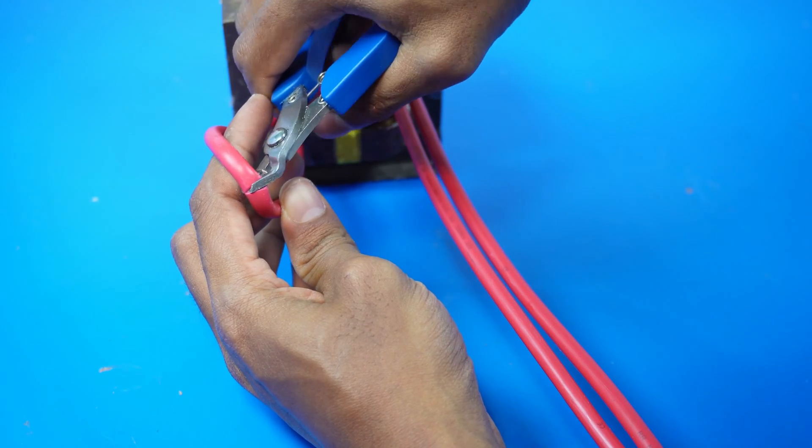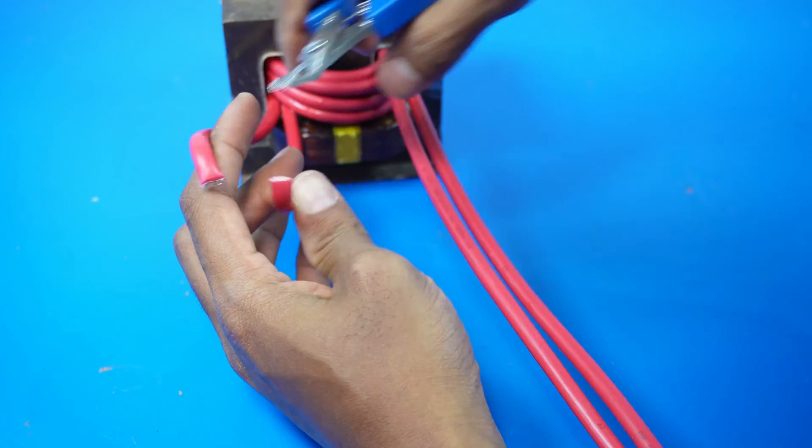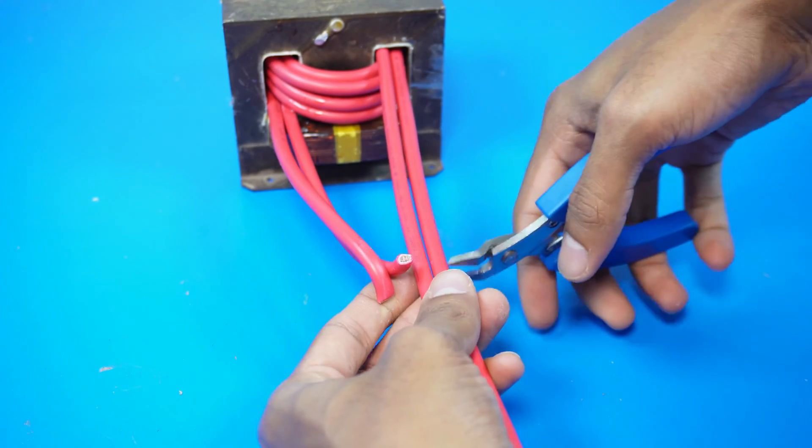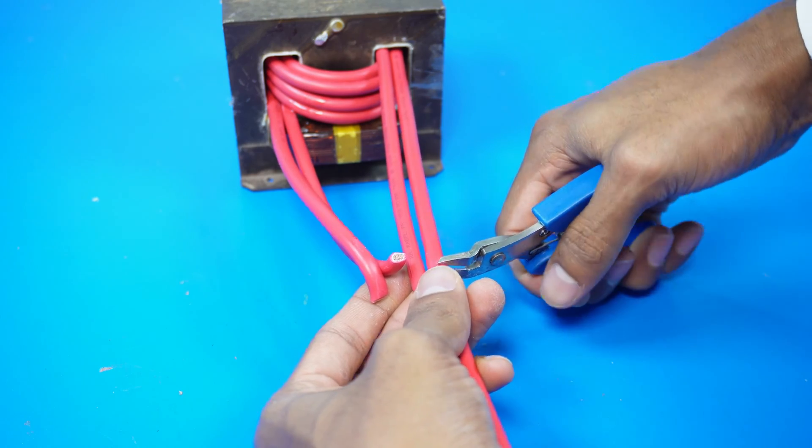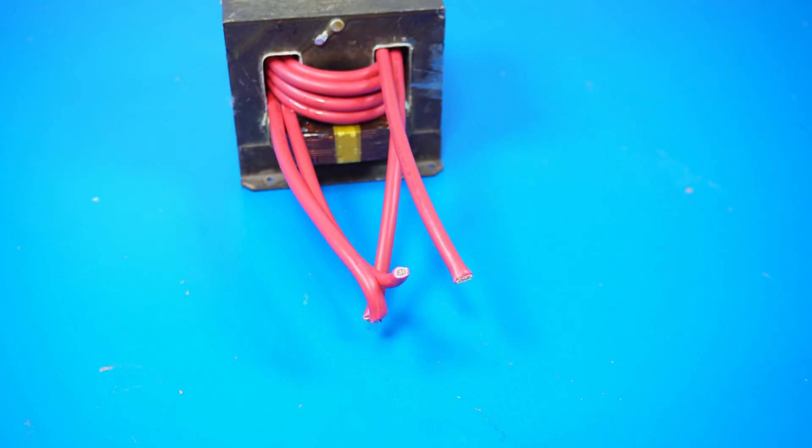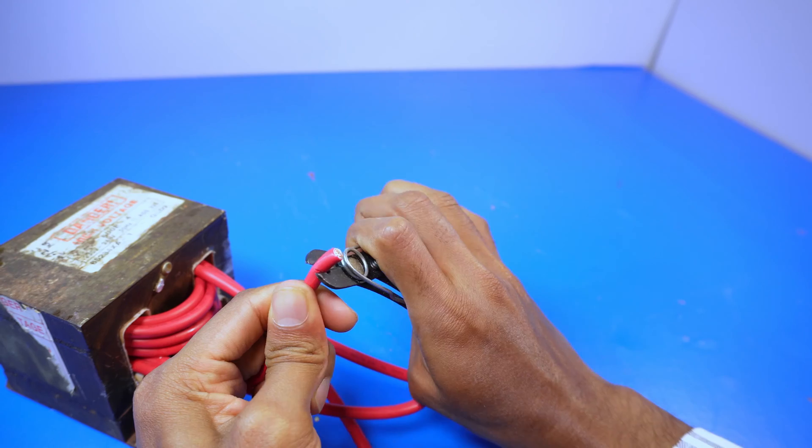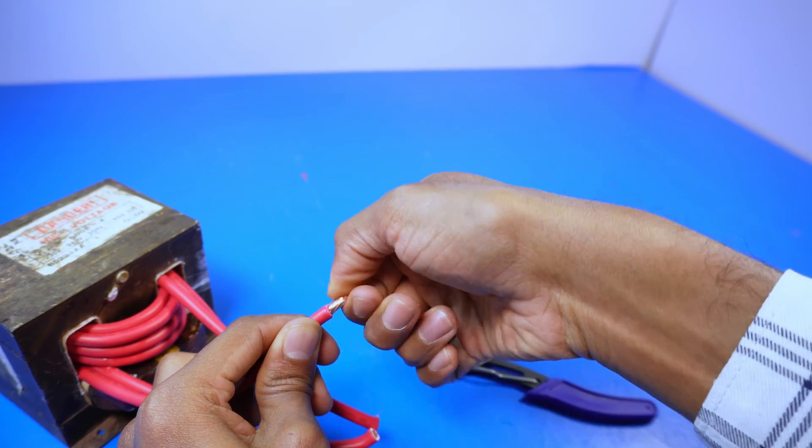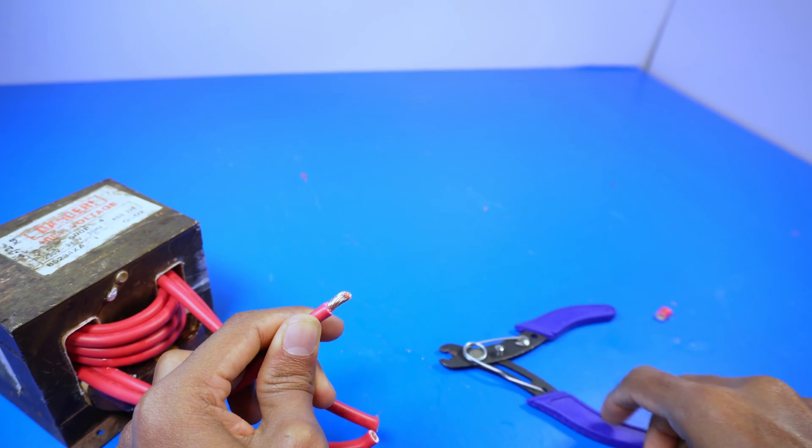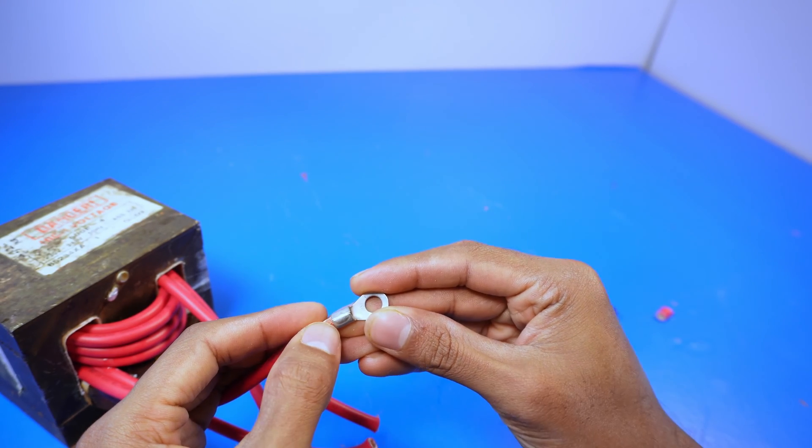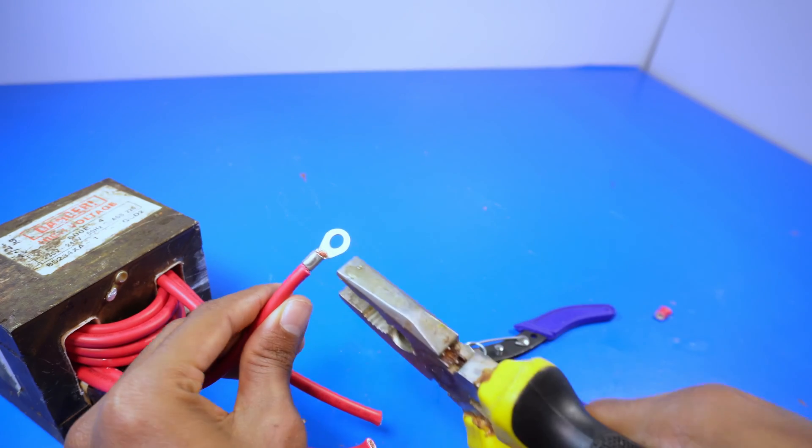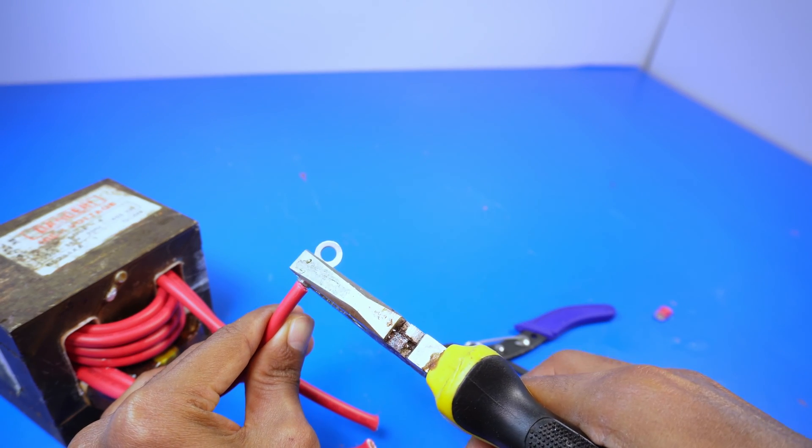I then cut the bent wire in the middle and trimmed the other two wires to the same length. I removed the insulation from the ends of the wires and added lug connectors to all 4 wire endings. I pressed the connectors onto the wires using a pair of pliers.